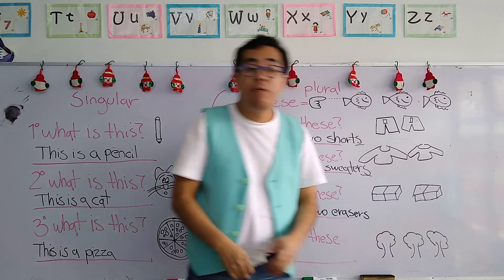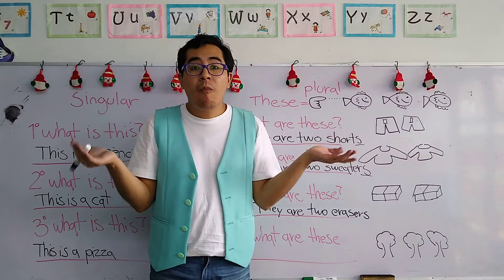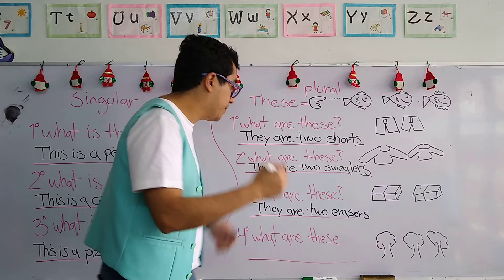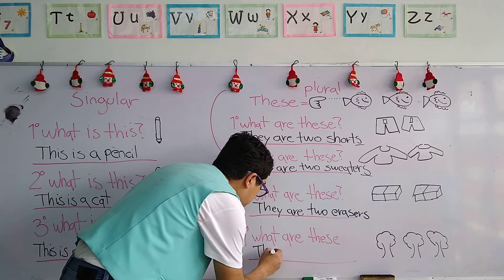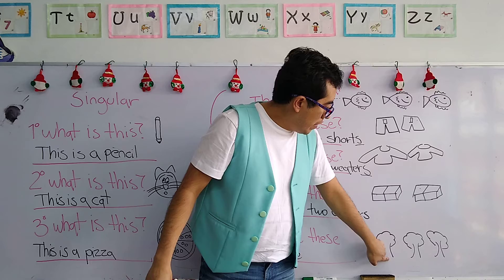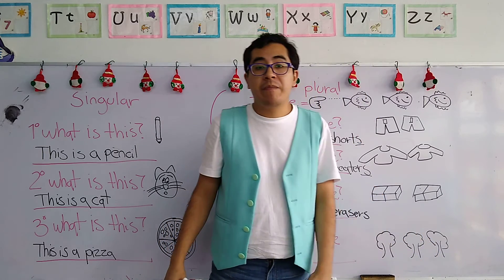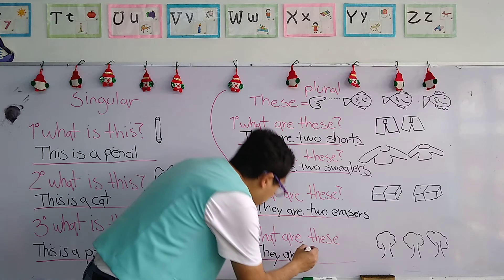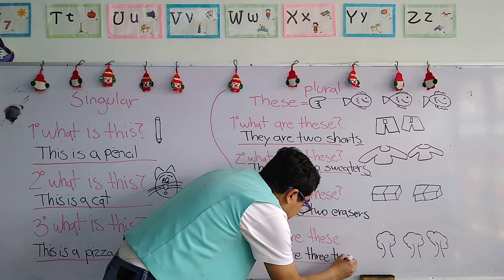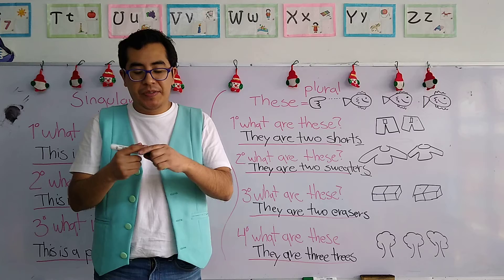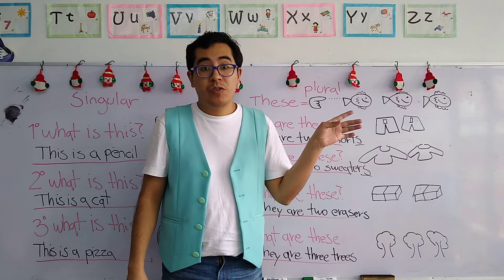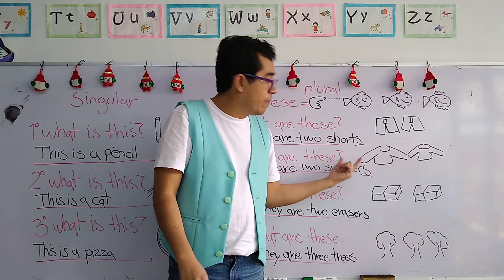And finally, number four. Once again, the question: 'What are these?' ¿Qué son estos? They are... one, two, three. Remember the number with a letter: they are three trees. They are three trees. And remember, this is in plural form, so don't forget to add S at the end of the object.